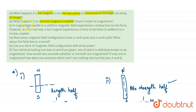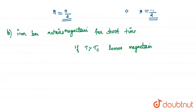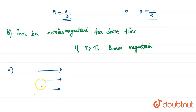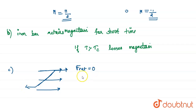What is question C? A magnetized needle in a uniform magnetic field experiences a torque but no net force. Drawing this roughly — a uniform magnetic field is applied and a needle is placed in it. The forces act in opposite directions so the net force is zero, but it experiences a torque.